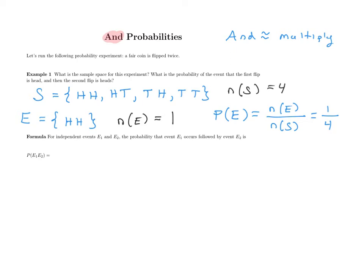You could also write this as a decimal: 0.25, which is 25% — this event happens one out of every four times. We don't need anything new to answer this problem. However, this approach can be quite lengthy, especially if you flip a coin ten times in a row. Your sample space is going to be huge and inconvenient to list out.